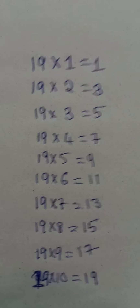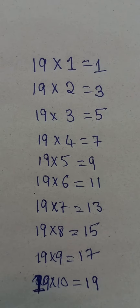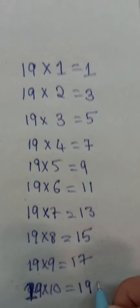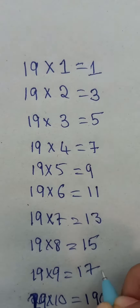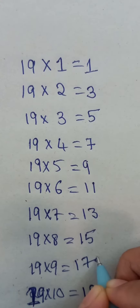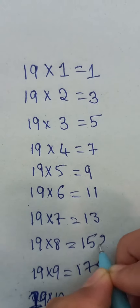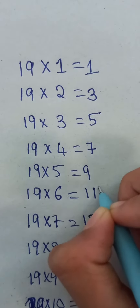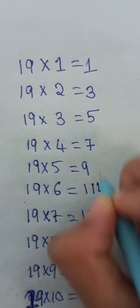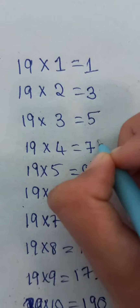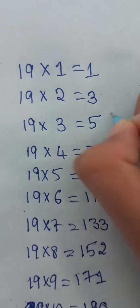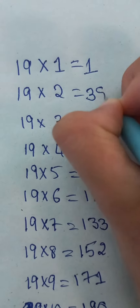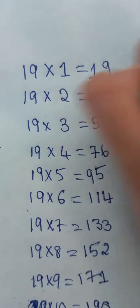Now we should write 0 to 9 from down to up: 0, 1, 2, 3, 4, 5, 6, 7, 8, 9.